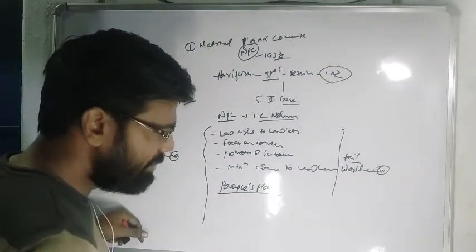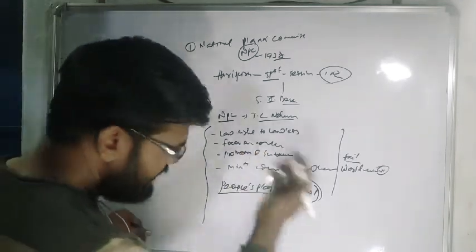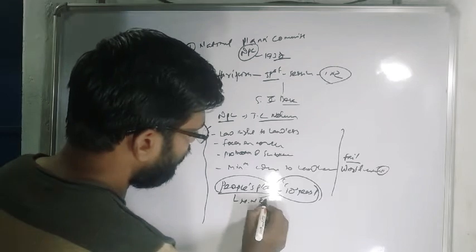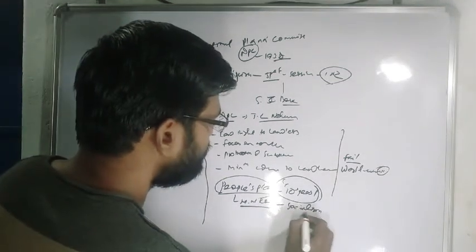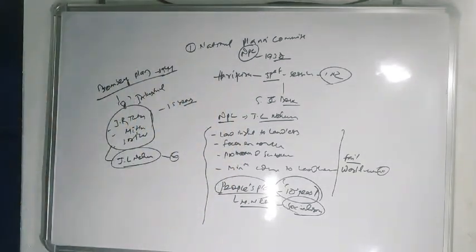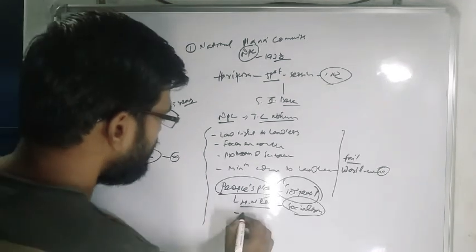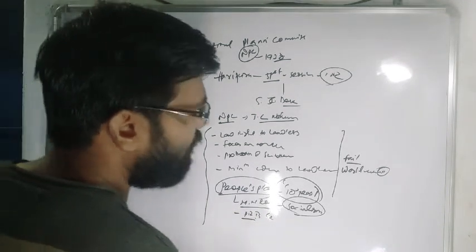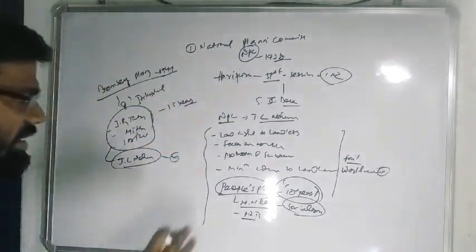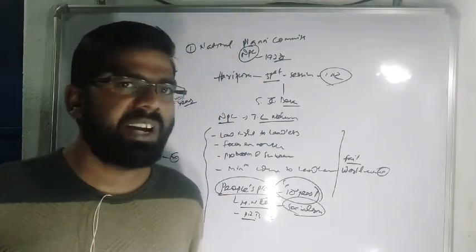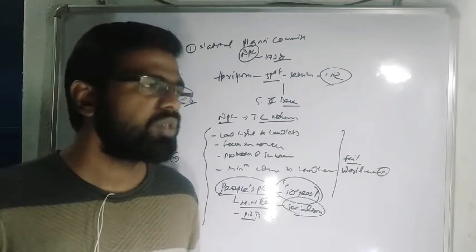Later on, People's Plan came. People's Plan was for 10 years. This plan was proposed by M.N. Roy, a renowned communist and pioneer of socialism. The idea was that resources must be distributed equally and percolate to the grassroot level, with equal importance on both agriculture as well as the industrial sector. This is socialism, Marxist ideology, where wealth must be distributed equally among the members of the society.